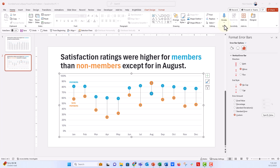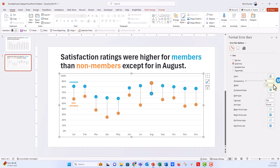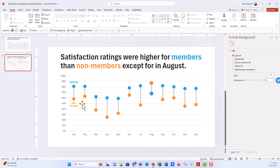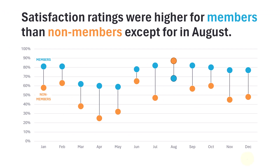Close out of that and now you can see beautiful error bar dumbbell sticks between the two series of dots. The August data where the values swapped also correctly shows the stick between them. Go ahead and format the error bars — set them to 1.5 width and match the color. It looks great in normal editing view. When you put it in slideshow mode, the dumbbell sticks are now perfectly between those two dots. This is the way to fix the vertical dumbbell and lollipop issue when presenting these custom charts inside PowerPoint.